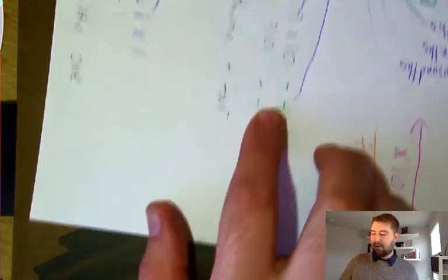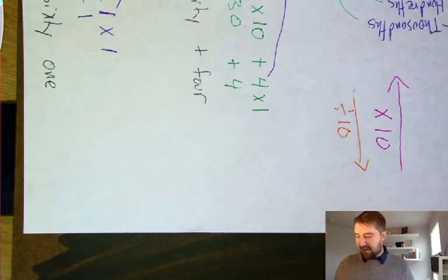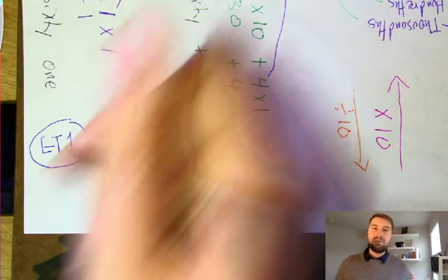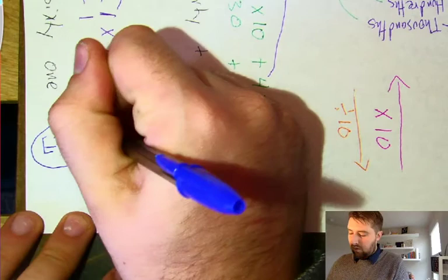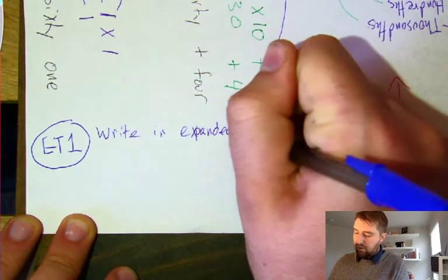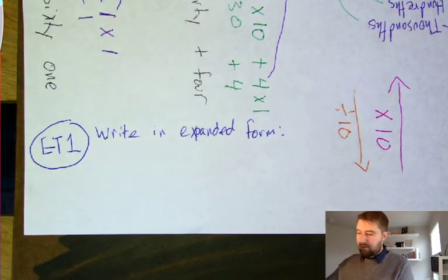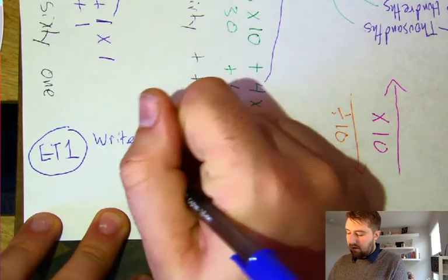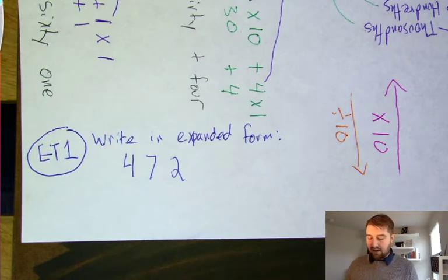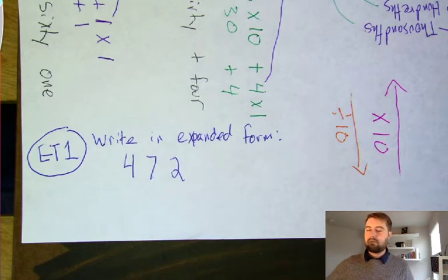Time for your first exit ticket problem. Get your exit ticket paper ready—I'm going to label this exit ticket one. This problem will be the first answer on your exit ticket. Write 472 in expanded form. That will be your first exit ticket answer. Solve that, write it down on your exit ticket sheet, and then we'll put it into the form at the end. Feel free to rewind if you need to go back and check.